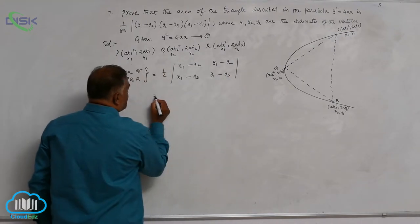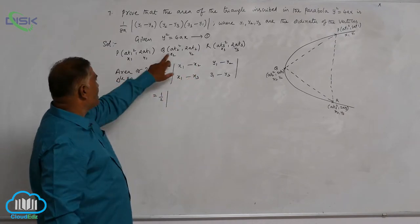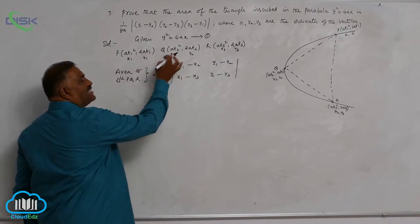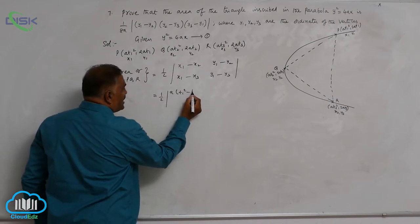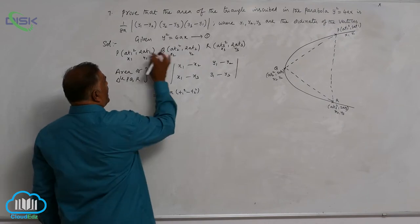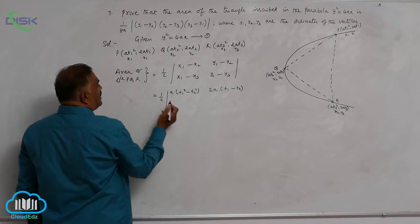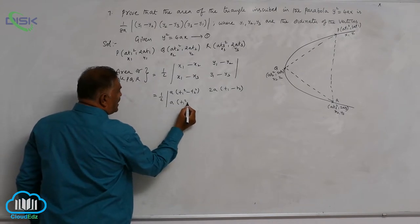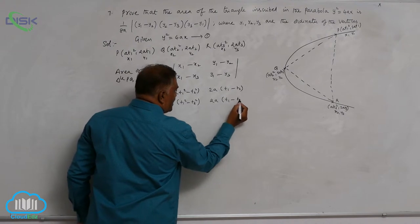Let us simplify very carefully. x₁ minus x₂, this minus this. You can see a is common here. a into t₁² minus t₂². Again, 2a into t₁ minus t₂. Now, a into t₁² minus t₃². 2a into t₁ minus t₃.